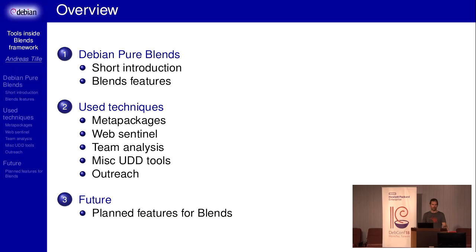I'm, as usually, talking about blends when I'm at a Debian conference, and I hope I previously made some good introduction about what are good reasons to have blends and what they are. Today I want to become a little bit more verbose about the tools we are using. I will give a short introduction and then come to the techniques: metapackages, Web Sentinel, team analysis, tiny scripts and queries for the UDD, and what we are doing to reach out to newcomers and what we plan to do.